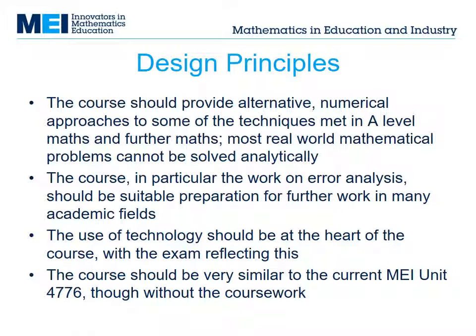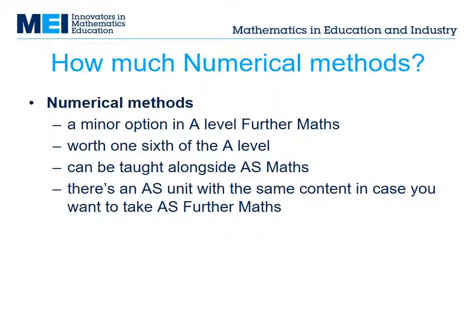In the current MEI spec there's a successful numerical methods unit and we wanted to make sure that the new one looks very similar — there are not many changes. Numerical methods is a minor option, one-sixth of A-Level Further Maths. There is a small amount of numerical methods in the non-AS part of A-Level Maths. This unit builds on that, but it's easy to teach from scratch if you want to teach it in year 12. There is an AS unit with the same content as the A-Level minor option; it's examined at AS standard and counts for one third of AS Further Maths.